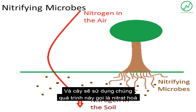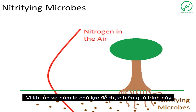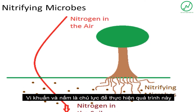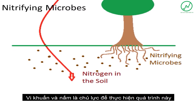This process of taking nitrogen out of the air and putting it into the soil for plants to use is called nitrification. The bacteria and fungi that perform nitrification are called nitrifying microbes.